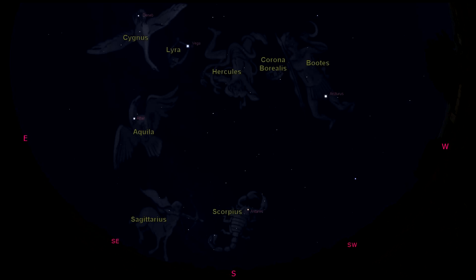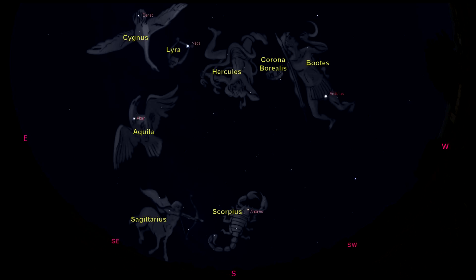Rising high in the east we have three bright stars of summer that we usually refer to as the Summer Triangle. They are the stars Vega, Deneb, and Altair, which are part of the constellations Lyra the Harp, Cygnus the Swan, and Aquila the Eagle.